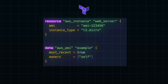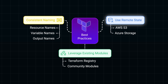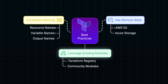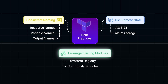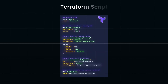Like any programming language, there are a few best practices to manage your infrastructure effectively. Instead of storing your state file locally, you should use a remote backend like AWS S3 or Azure Storage — this allows for better collaboration and scalability. Instead of building everything from scratch, use pre-built community modules from the Terraform registry to save time and simplify complex setups. And make sure your resources, variables, and outputs have consistent names to help with readability and long-term maintenance.